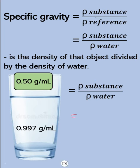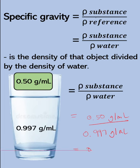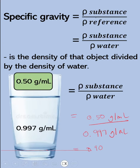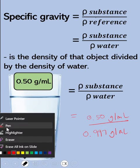Its density is equal to 0.50 grams per ml over the density of water, which is 0.997 grams per ml. If you divide this, we get 0.50.